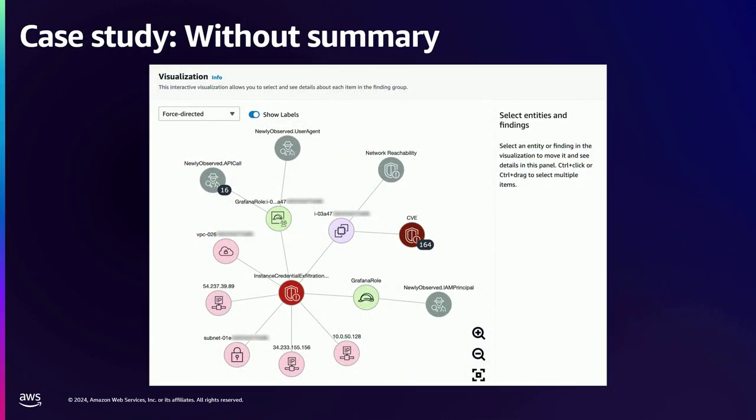This is what Detective looks like. We've focused on chaining and grouping findings together, but this is the graph database I mentioned in the beginning. It will bring together — you can see in red the GuardDuty findings, the CVE, the EC2 instance, and the IP addresses. This is a screenshot, but it is interactive, so you could go click through and spend time going through that.